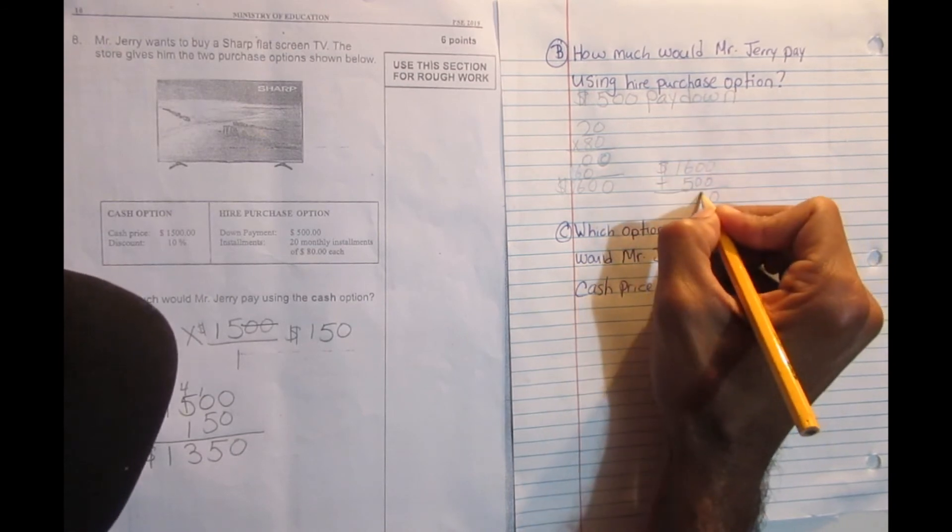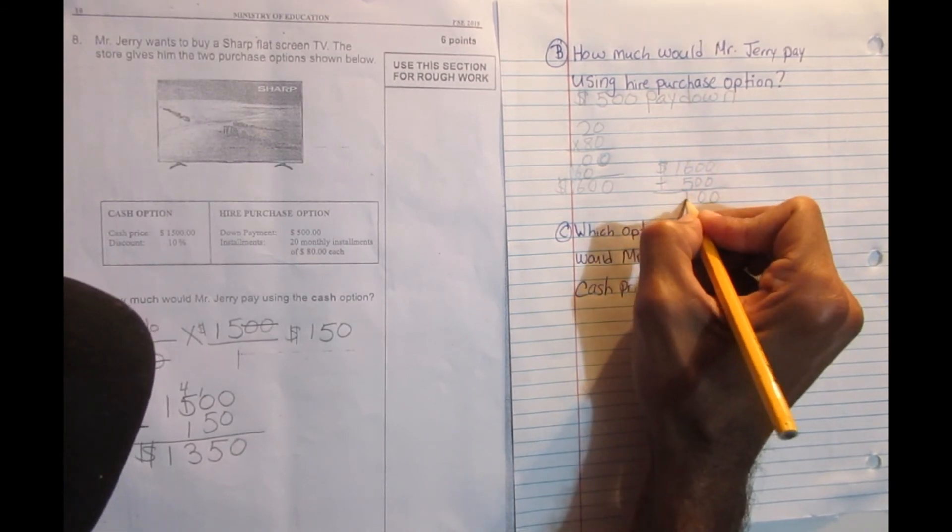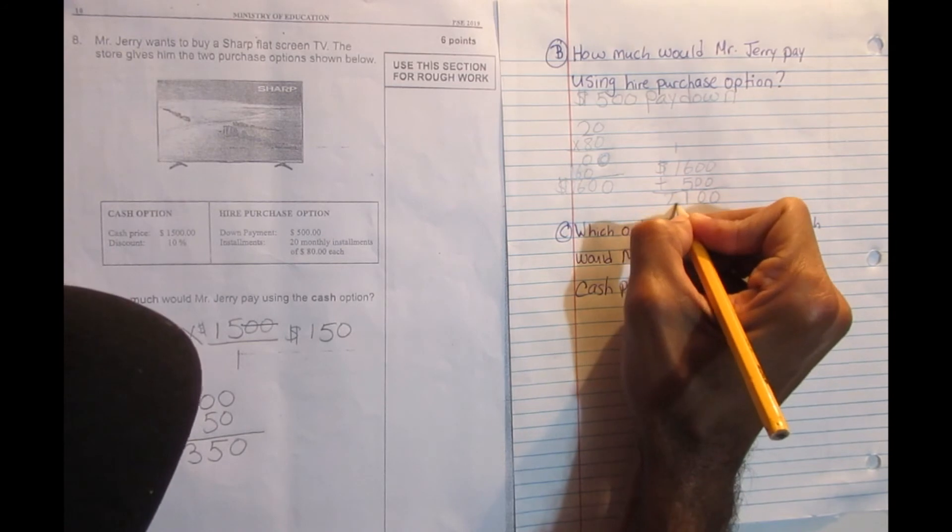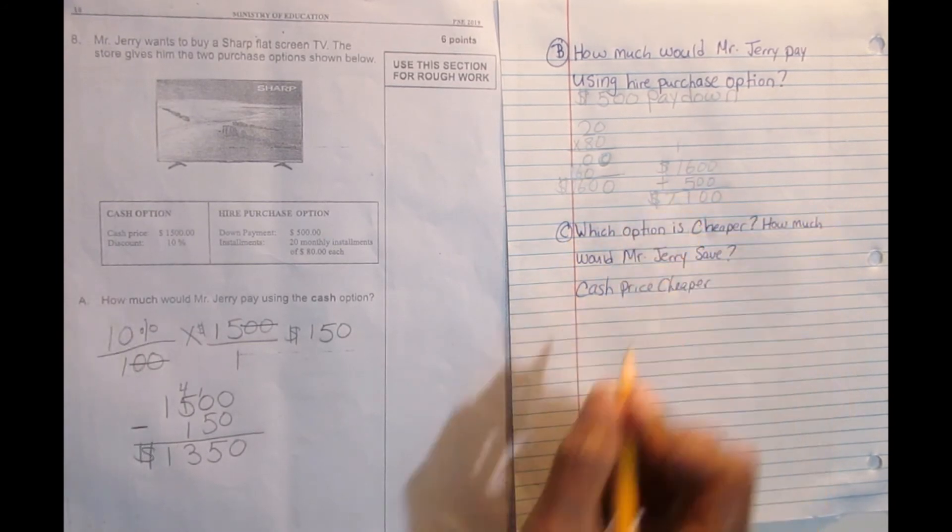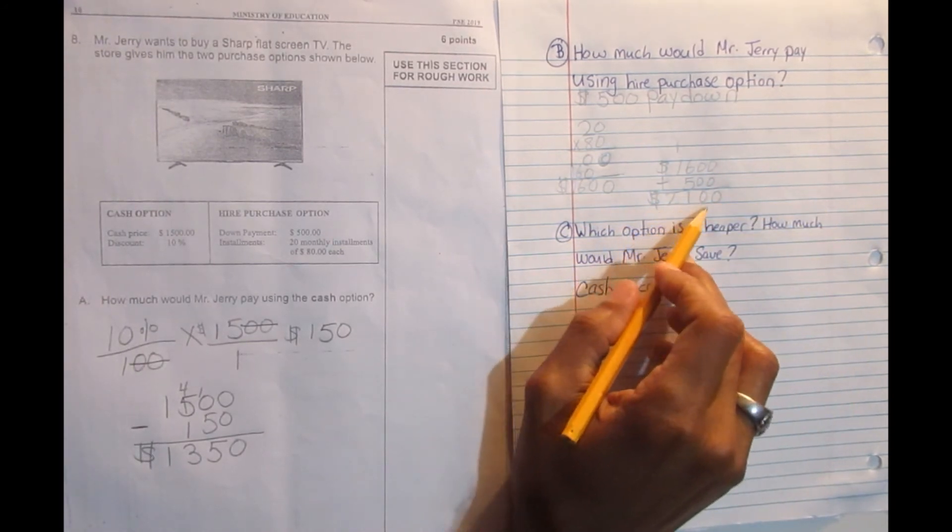0, 0, 6 plus 5, 11. Bring down 1, carry the 1. 1 plus 1, 2. So the hire purchase price is $2,100.